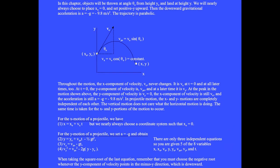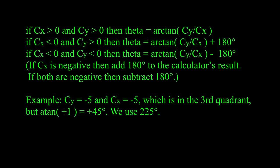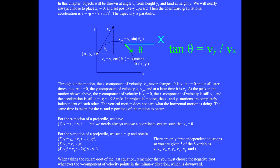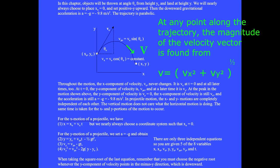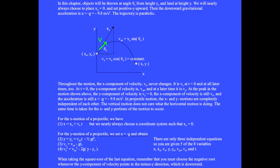At any point in the trajectory, the direction of motion relative to the plus x axis is given by tan theta equals v sub y divided by v sub x. Remember that the calculator's inverse tangent function does not always return the right quadrant, so you might have to adjust its answer by adding or subtracting 180 degrees. At any point along the trajectory, the magnitude of the velocity vector is v equals the square root of v sub x squared plus v sub y squared. At every instant, the velocity vector points in the direction of motion and is tangential to the path.